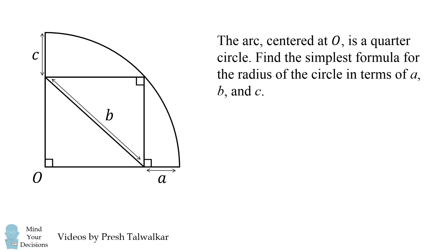Consider the following diagram. The arc centered at O is a quarter circle. Find the simplest formula for the radius of the circle in terms of a, b, and c.